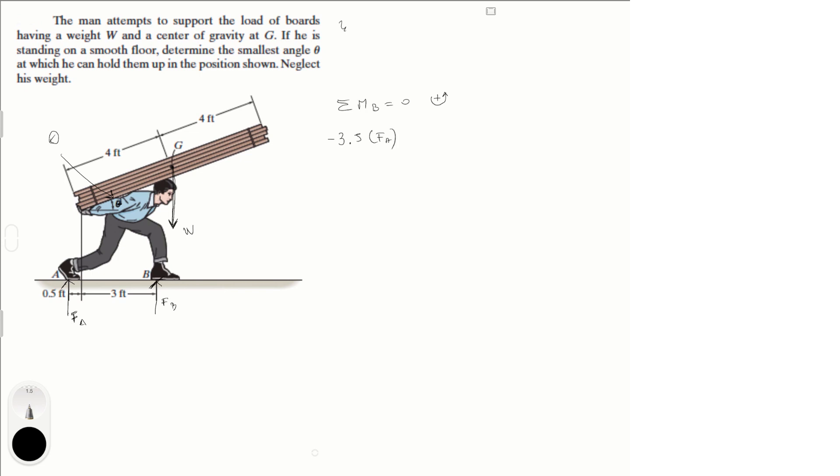Then the sum of the moments at B will be equal to minus 3.5 times F of A. So remember, we're here, right? We're doing the sum of the moments at B and the first moment is created by this force F of A times this distance of 3.5 feet, plus W times this distance right here. What is this distance equal to?